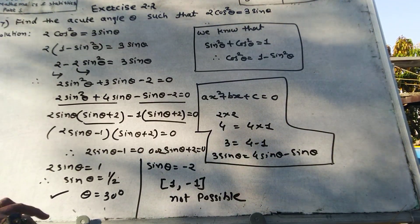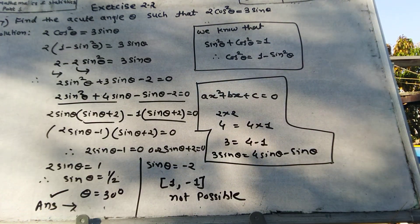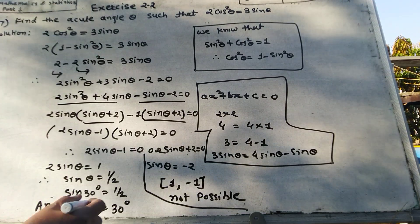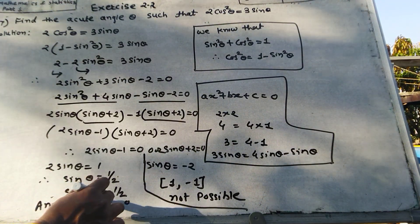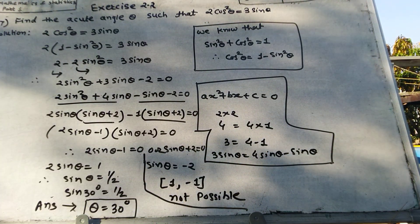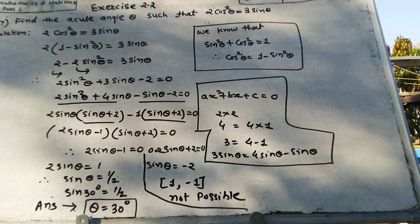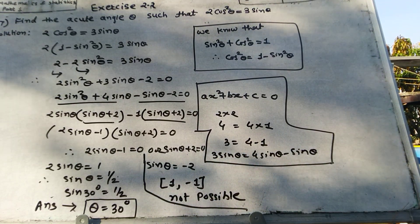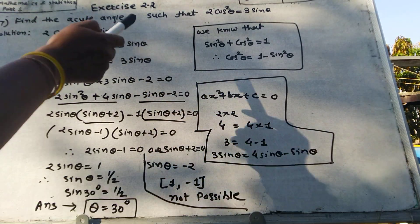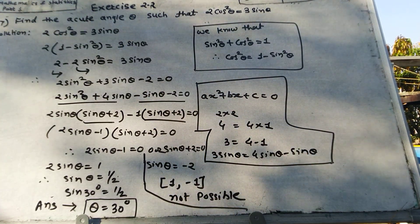Therefore, the answer is theta equals 30 degrees. This is the accurate angle which satisfies 2 cos squared theta equals 3 sin theta.